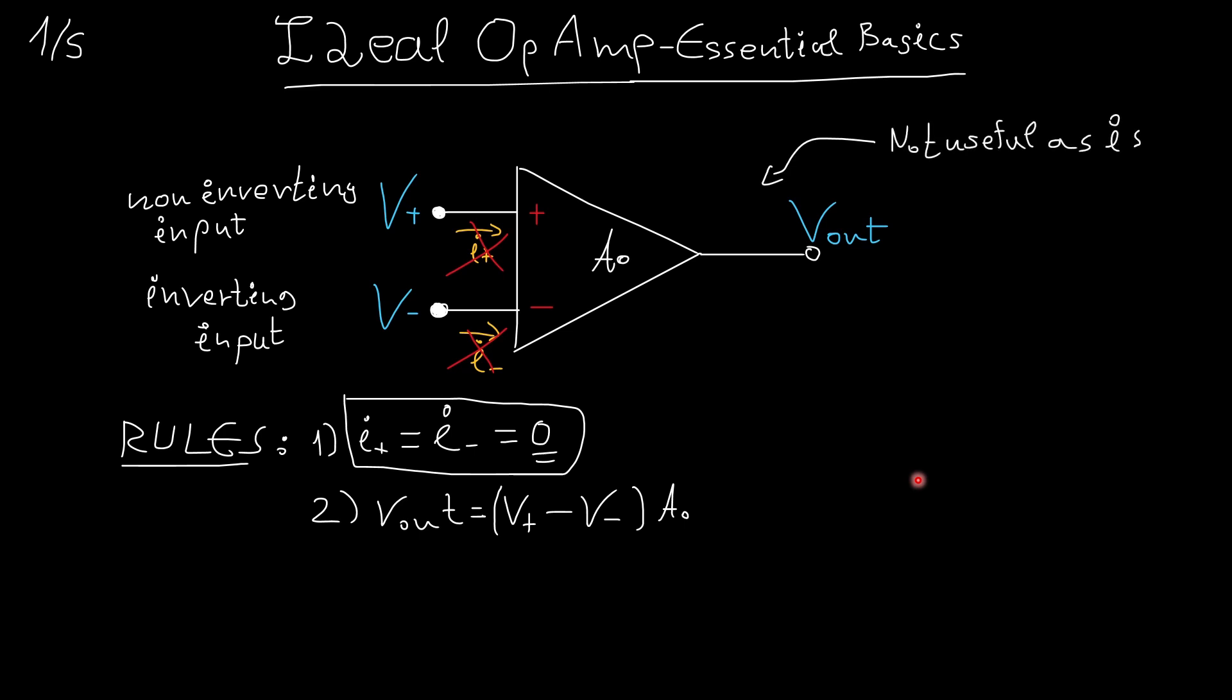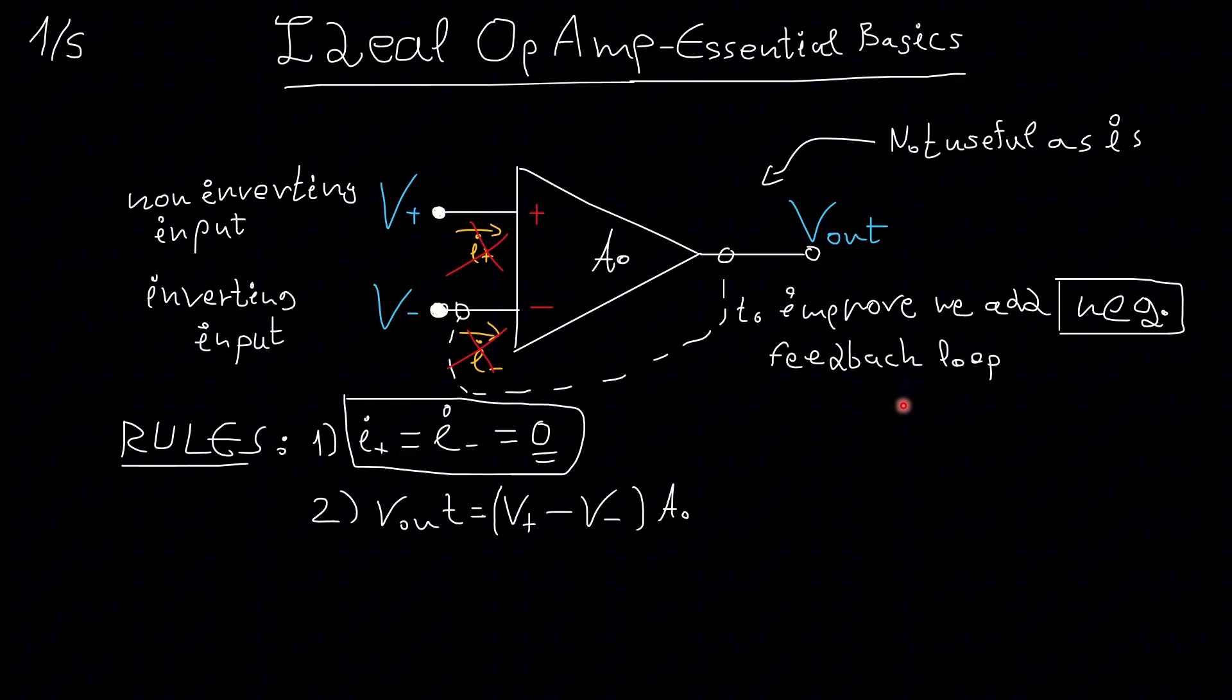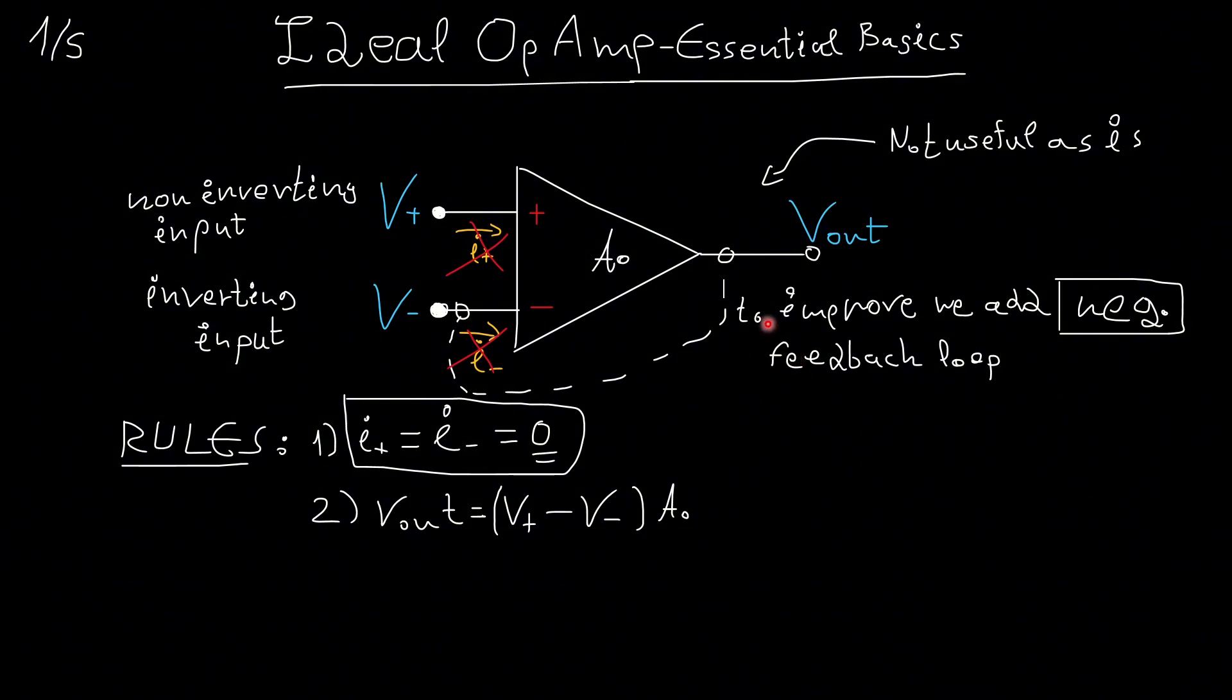However, this little configuration as is, is not really useful. So what we do most of the times is create a negative feedback loop. I want you to pay attention on this equation. This result, the output, we want it to be finite. We want to have an actual output which is useful.